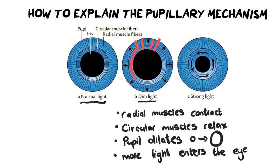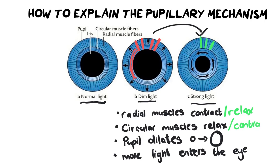What happens if you have to explain strong light — meaning you're going into bright light? You'll notice in the diagrams the pupils have dramatically changed size — one is going from really big and then the other is going really small. You just have to make a very small change. When you're going into bright light, instead of the radial muscles contracting, they actually relax. And the circular muscles, on the other hand, now contract — they do the opposite of what they originally did. Instead of the pupil dilating, the pupil is going to reduce.